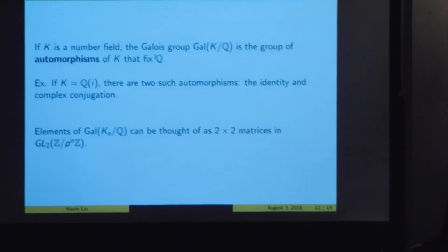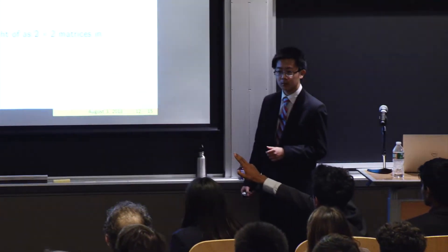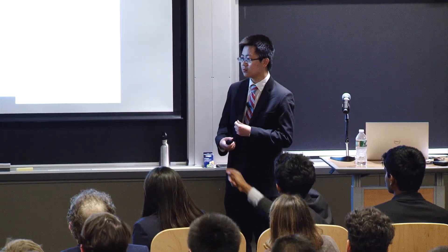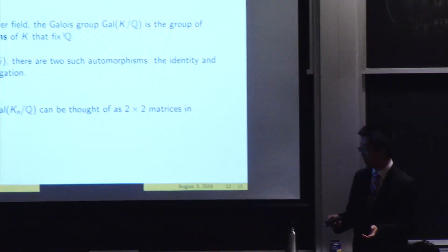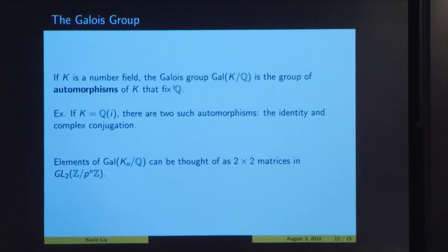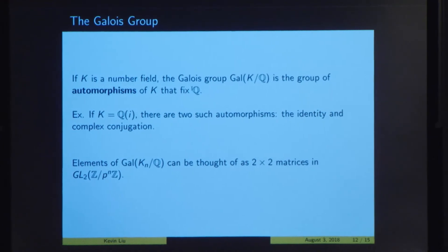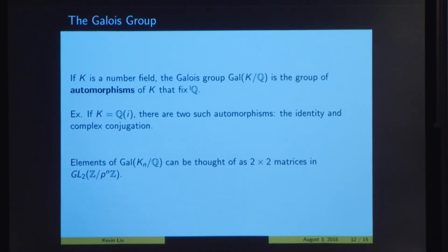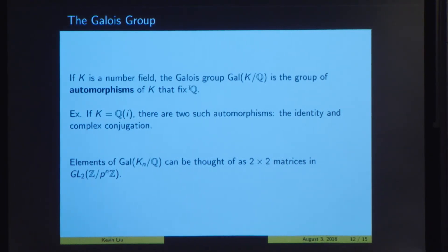Sanjay. So can you go back one slide? How exactly do you associate the elements of the Galois group with the elements of GL2? So how do you associate the elements of Galois group with these matrices? So the idea is that the p to the n torsion points as a group are actually isomorphic to the direct sum of this integers modulo p to the n with itself. So the idea is that if we look at the automorphisms of KN, these can also be thought of automorphisms of these p to the n torsion points, and these are just going to be matrices over that vector space.